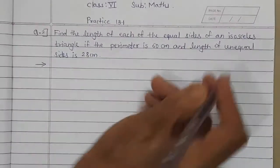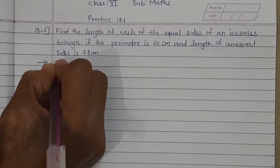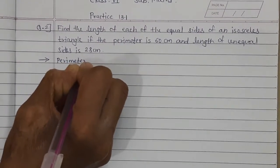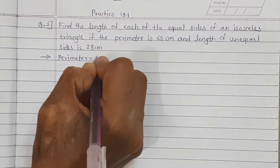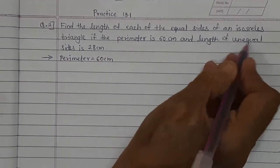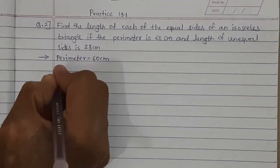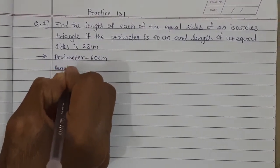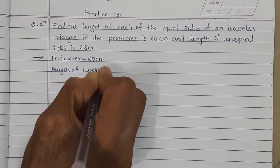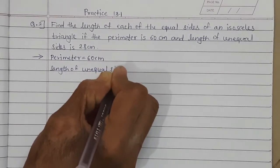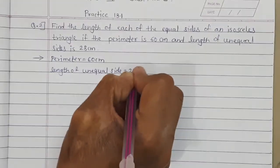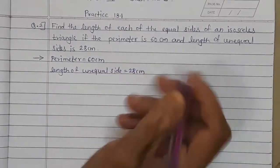Perimeter of the isosceles triangle is given: 60 cm. And the length of the unequal side is given: 28 cm.